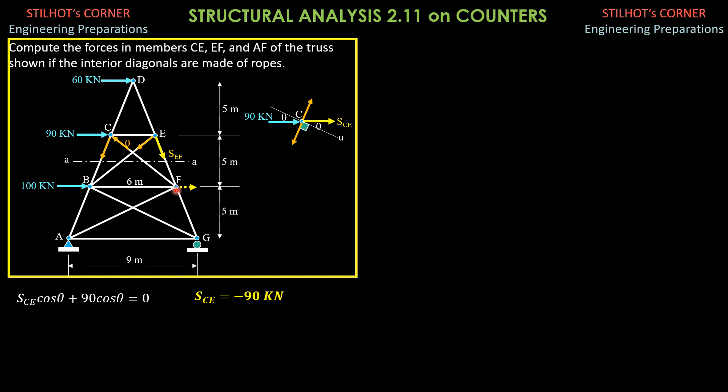This is SEF times vertical component, 10 divided by hypotenuse, which is square root of 3 squared plus 10 squared, square root of 109. So the vertical component is SEF times 10 over square root of 109, where 109 is 3 squared plus 10 squared.